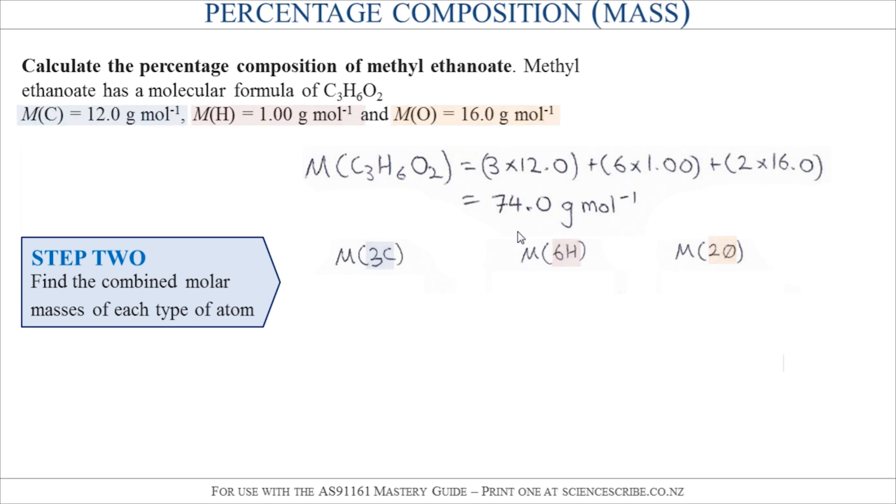So for three carbons I should have 3 × 12 because 12 is the molar mass for carbon. For six hydrogens, the molar mass of hydrogen is one so 6 × 1. And for oxygen there I'm going to have 2 × 16.